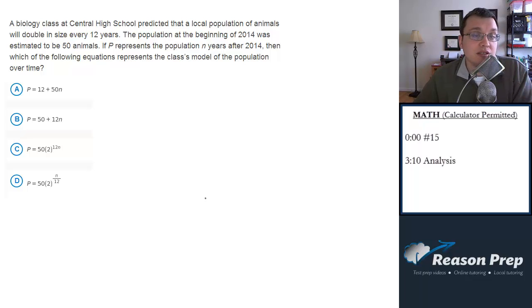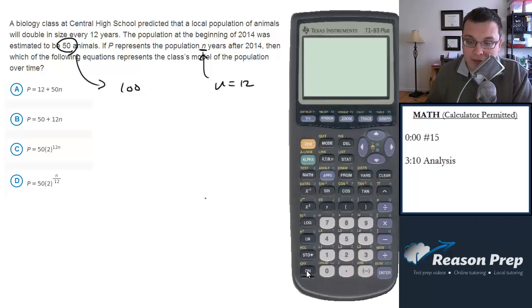So if this thing doubles in size every 12 years, 12 years after 2014, since they're starting at 50 animals, you're going to have 100 animals after that 12-year period. So what we can do is plug in n equals 12 into our equations here, and we better get 100. And if we do, we got our answer. If we don't, we can get rid of it.